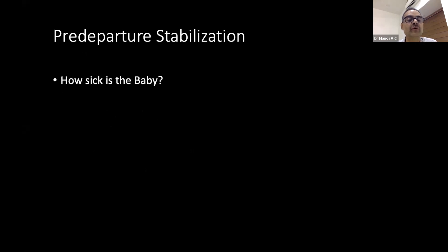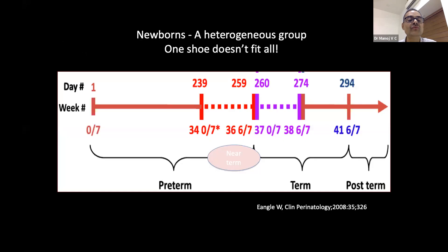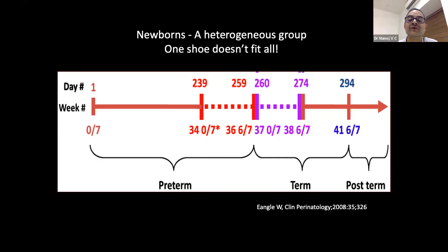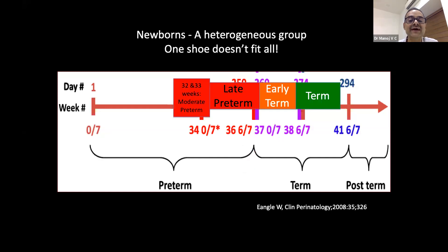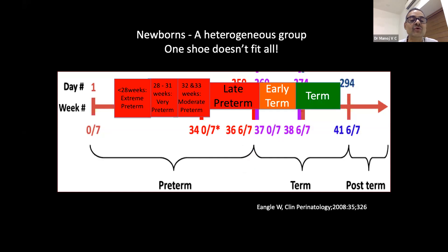The first thing when you're going to transport a baby is to assess how sick the baby is. As Dr. Chandra rightly pointed out, newborns are a heterogeneous group. We have late preterms, early term and term babies, moderate preterm, very preterm, and extreme preterm. We now also have periviable babies below 26 weeks. The criteria you use for transport will be different for each group.